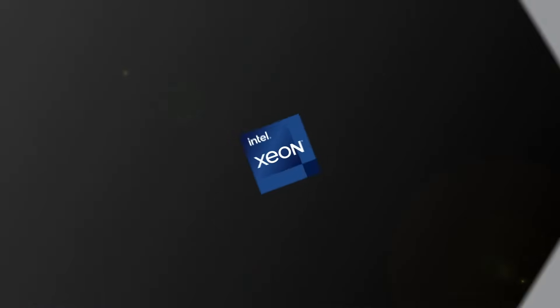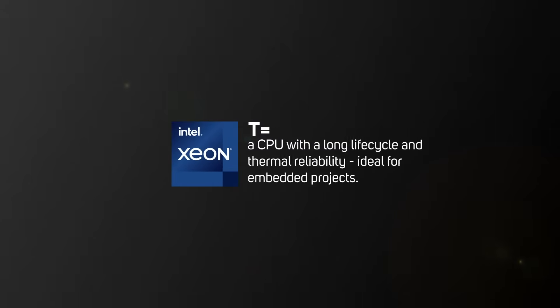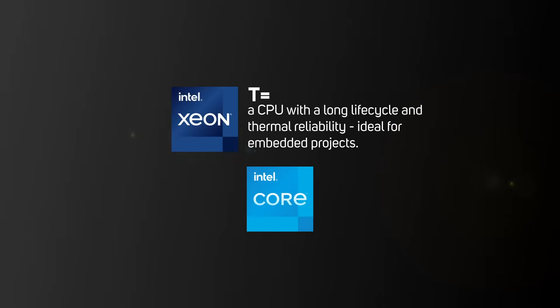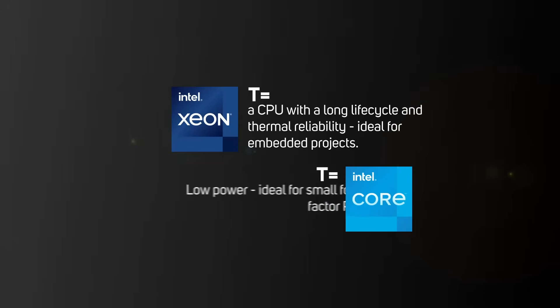To make things slightly more confusing though, the same letters used for Core CPUs and Xeon Scalable CPUs don't necessarily indicate the same thing. For instance, the T used with Xeon processors indicates a CPU with a long life cycle and thermal reliability, ideal for embedded projects. Whilst for a Core CPU, the T indicates low power, making it ideal for small form factor PCs.